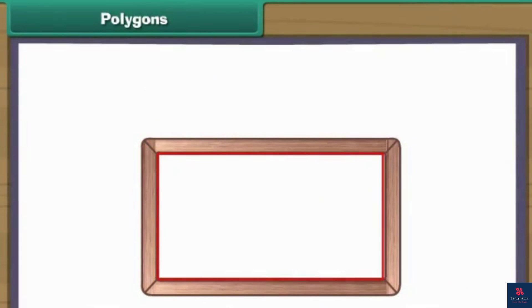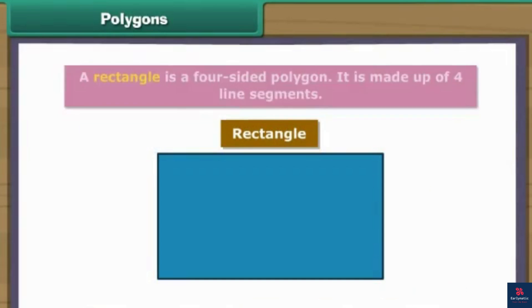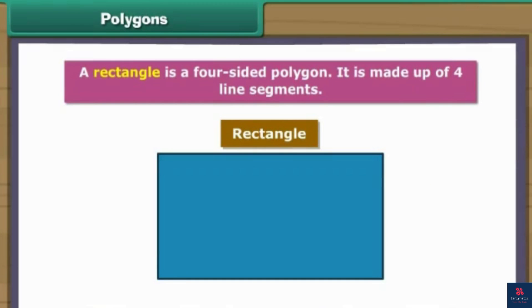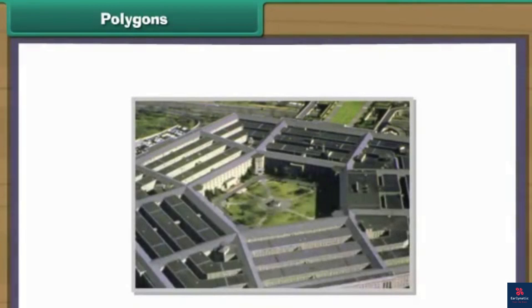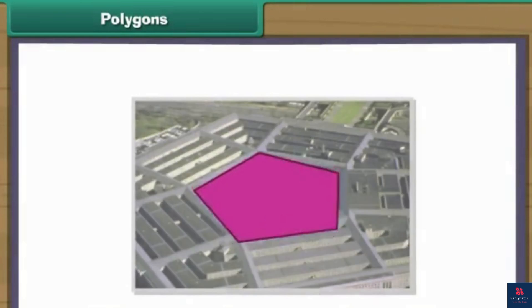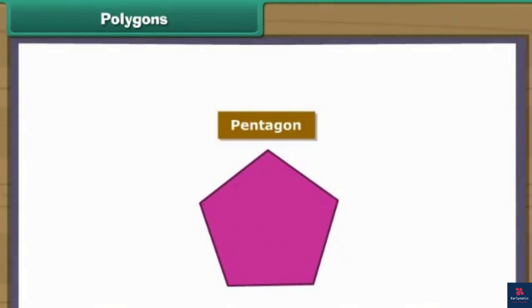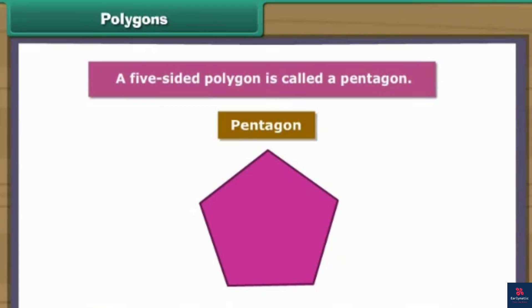We use four pieces of carved wood to create a photo frame. We have created a rectangular photo frame. A rectangle is a four-sided polygon made up of four line segments. Look at this image of the US Army Headquarters — it is known as the Pentagon as it has five sides. A five-sided polygon is called a pentagon.